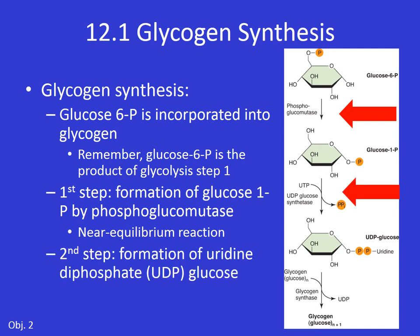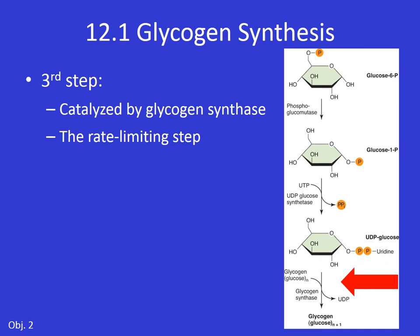This is done by an enzyme called phosphoglucomutase, and it's a near-equilibrium reaction. The next step is the formation of uridine diphosphate glucose. UTP — uridine triphosphate, similar to ATP but with uridine instead of adenine — comes in and displaces that phosphate group to make UDP glucose. The third and final step is catalyzed by glycogen synthase, and this is the rate-limiting step, so it's the most important step in actually forming glycogen.